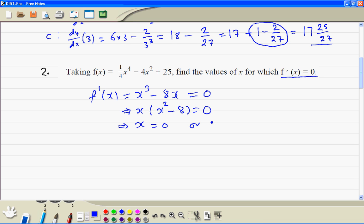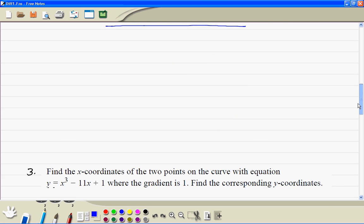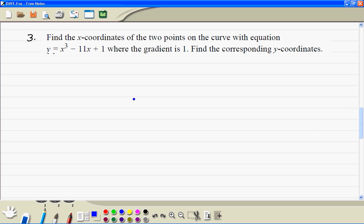This is x squared there. x squared is equal to 8. So x is plus or minus root 8. And that is plus or minus 2 root 2. So the solution is x equal to 0, and x equals plus or minus 2 root 2.